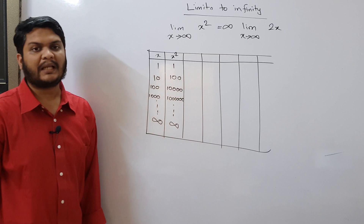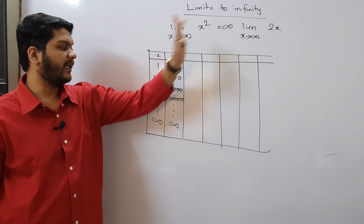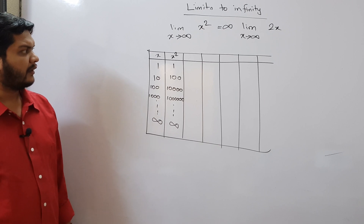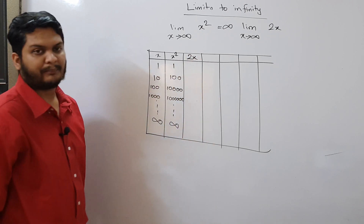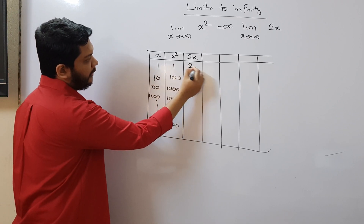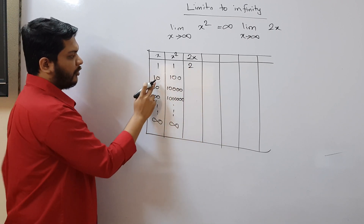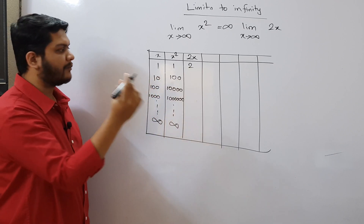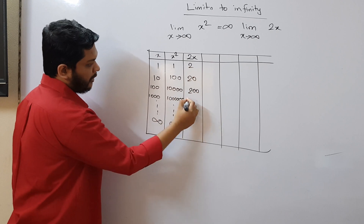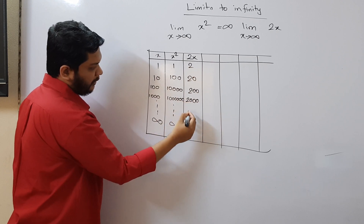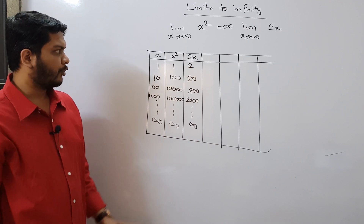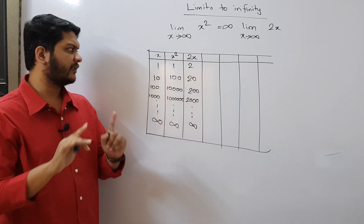So we can write that this limit will be plus infinity. Now let us consider the case of 2x. For x equals 1, 2x is 2. For x equals 10, we get 20. For x equals 100, we get 200. For x equals 1000, we get 2000. So here also we will get positive infinity.